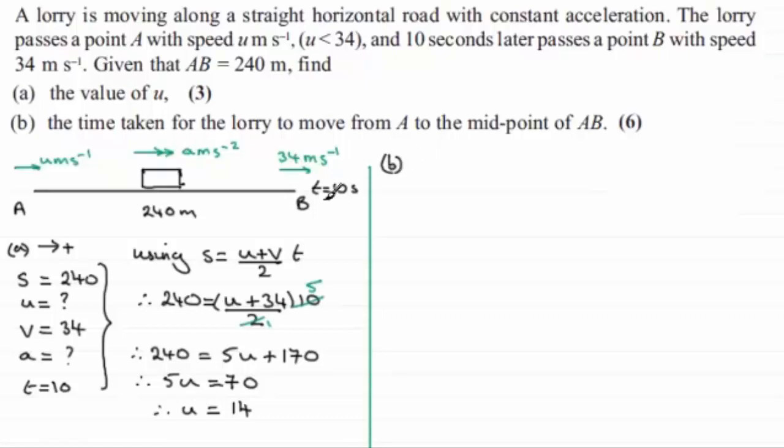And so if I'm to choose an equation, I'm going to think about using V equals U plus AT. And so therefore, what we've got is that V, we know, is 34. So we've got 34 equals U, which we've just found out is 14. So we've got equals 14 plus A times the time T of 10. So it's going to be 10A.